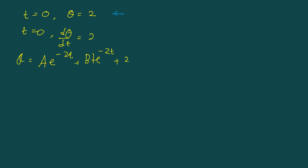When t equal to 0, theta equal to 2: we have a exponent 0 plus 0 plus 2 equal to 2. So a plus 2 equal to 2, giving a equal to 0. Our equation becomes theta equal to bt e minus 2t plus 2.